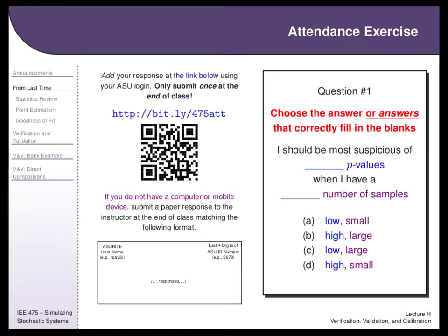Let's bring it in. How many people think A is correct? A couple. B? Not that many. C? A handful. D? A lot of people like D. Let's look at D first: high p-values with a small number of samples. Small sample size already tells you to be suspicious — if I only flip a coin twice, how much can I say? And we know low p-values are statistically interesting, so D is definitely one of the answers I was looking for.